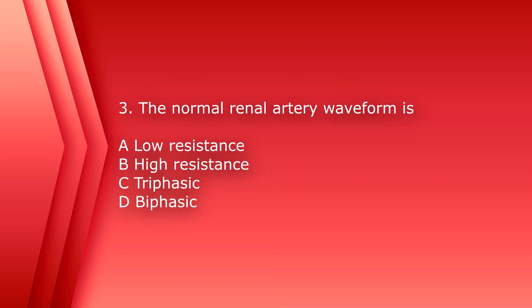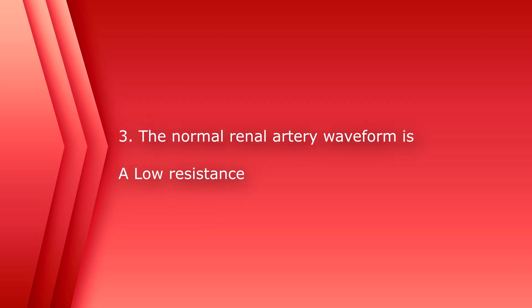Number three. The normal renal artery waveform is A, low resistance, B, high resistance, C, triphasic, or D, biphasic. The answer is A, low resistance. So it's going to have forward flow or antegrade flow throughout the entire cardiac cycle and a good amount of diastolic flow. And it is also monophasic.